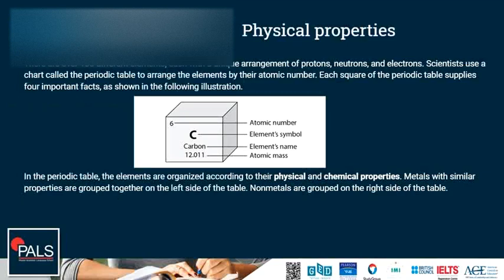What are physical properties? There are over 100 different elements, each with a unique arrangement of protons, neutrons and electrons. Scientists use a chart called the periodic table to arrange the elements by their atomic number. Each square of the periodic table supplies four important facts: the atomic number, the element symbol, the element's name, and the atomic mass. In the periodic table, the elements are organized according to their physical and chemical properties.